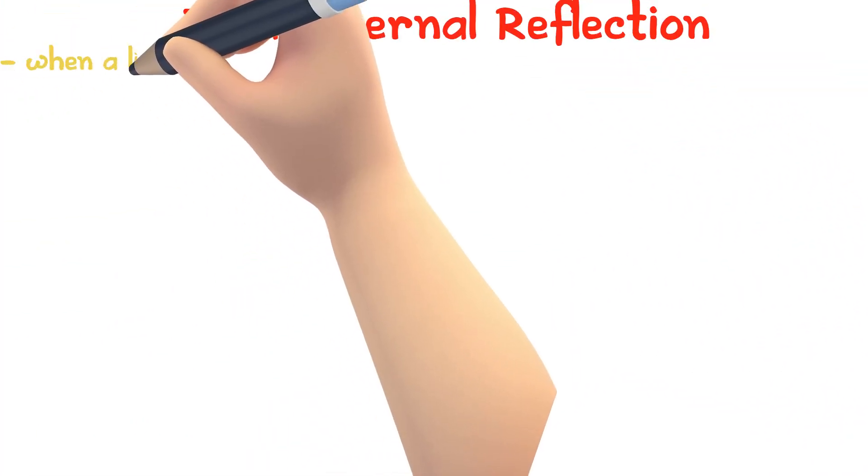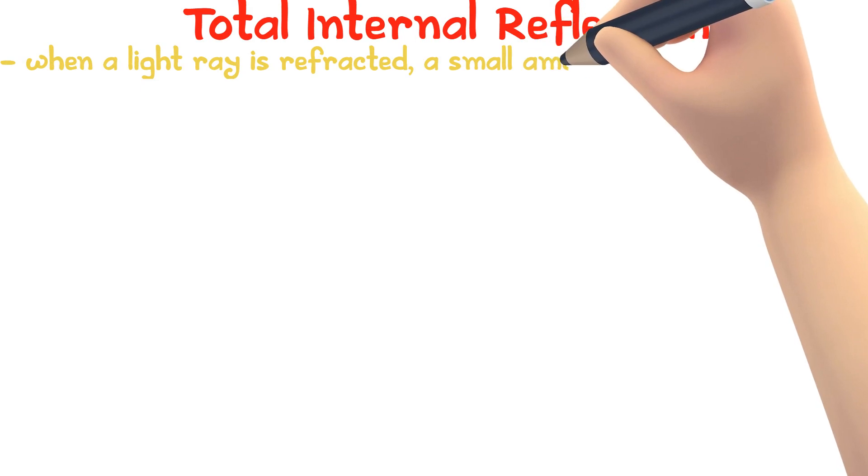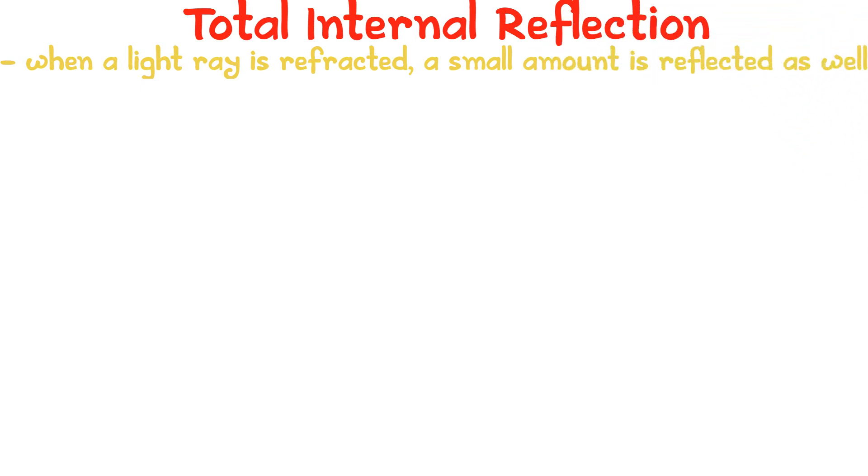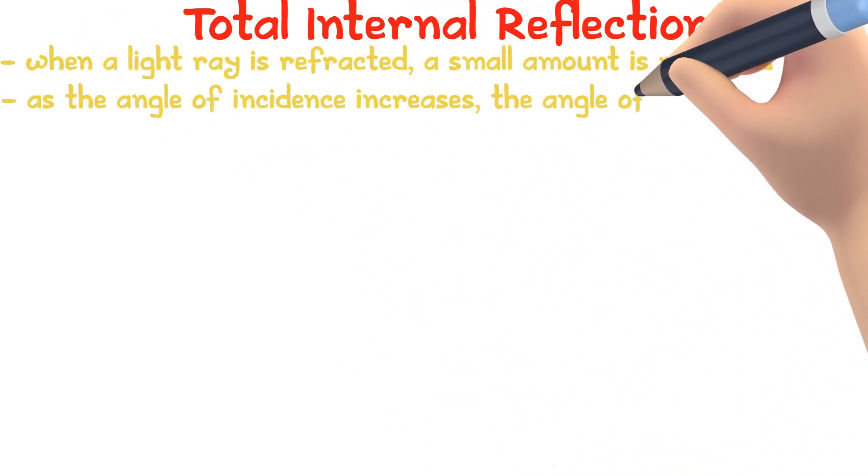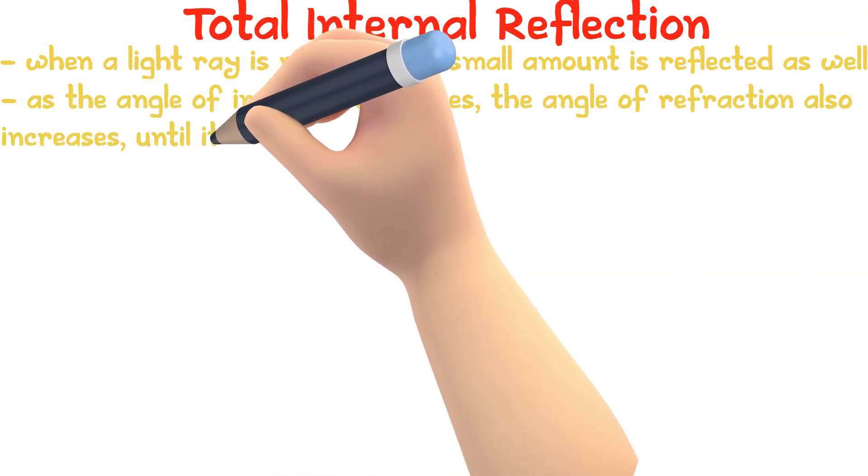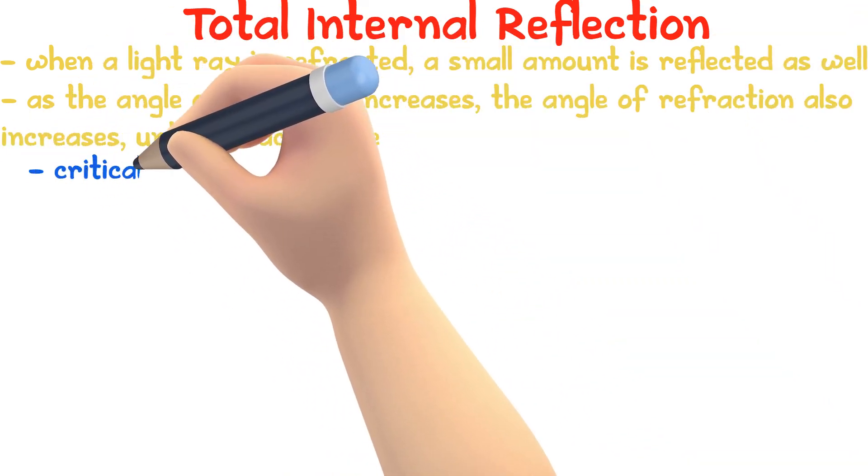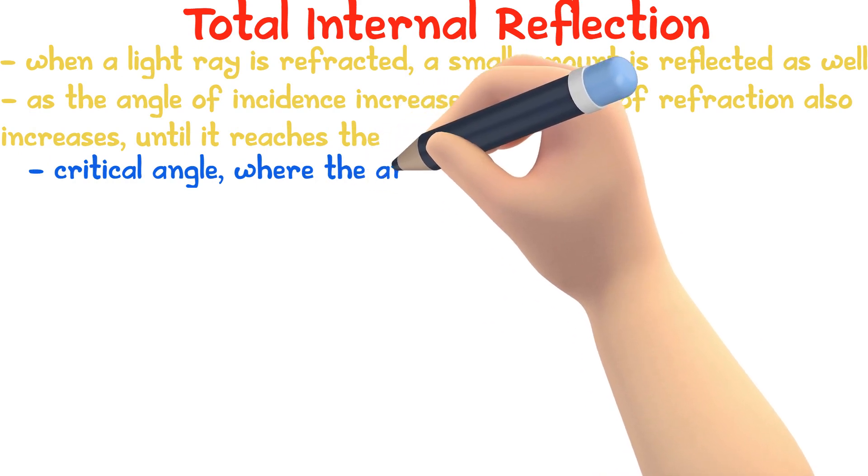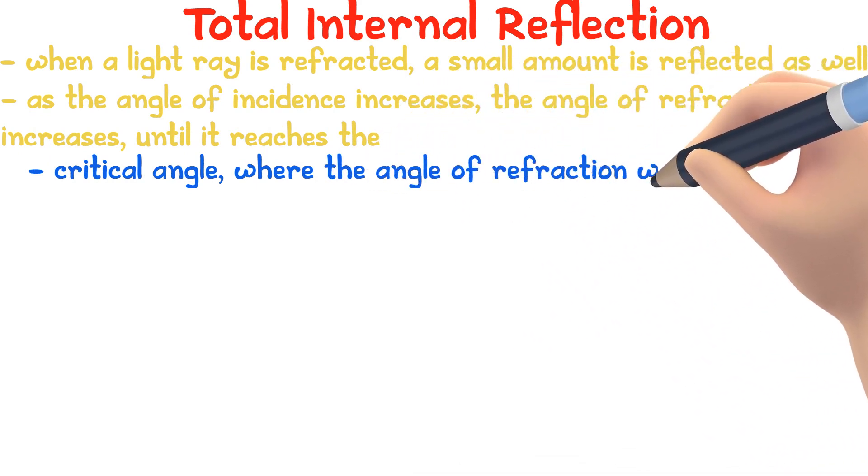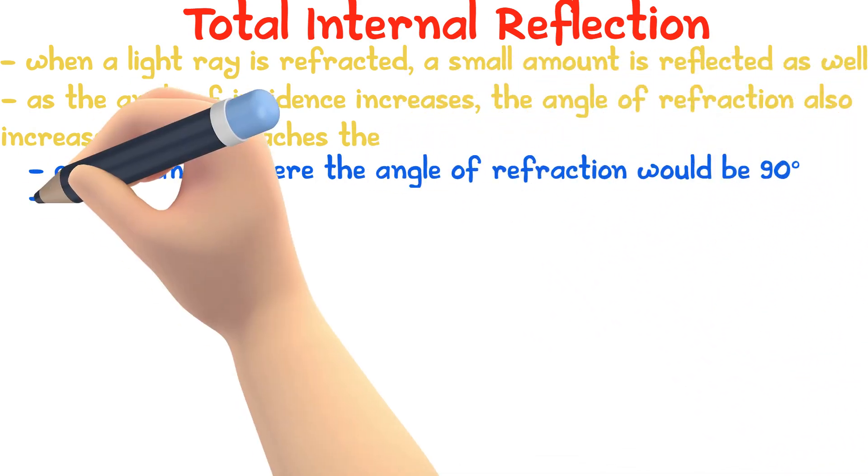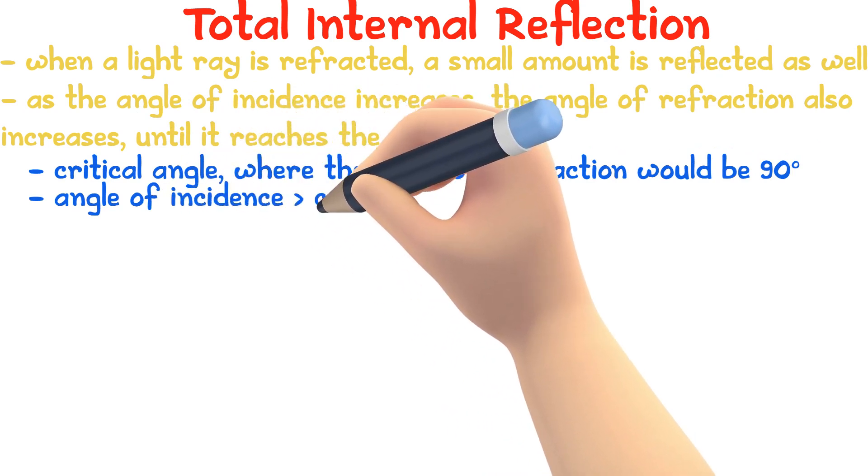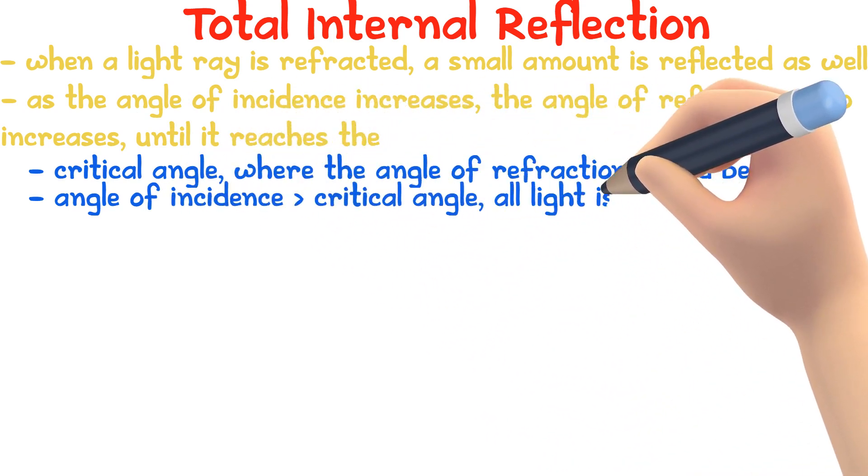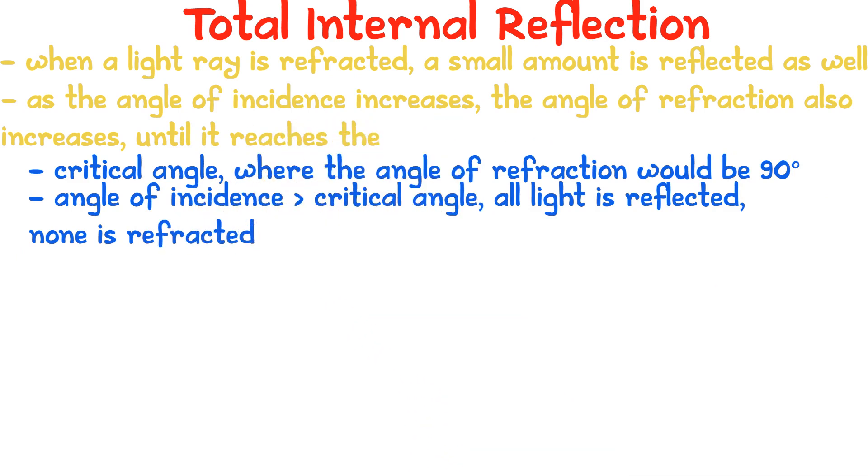When a light ray is refracted, there is a small amount that is reflected as well, but as the angle of incidence increases, the angle of refraction also increases, until it reaches the critical angle. When the critical angle is reached, the angle of refraction would be 90 degrees. When the angle of incidence is larger than the critical angle, all the light is reflected. None is refracted. We call this total internal reflection.